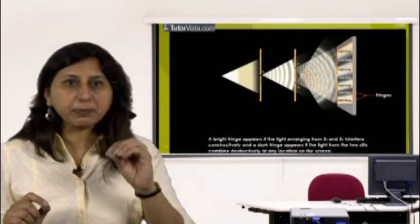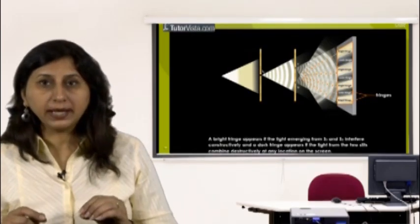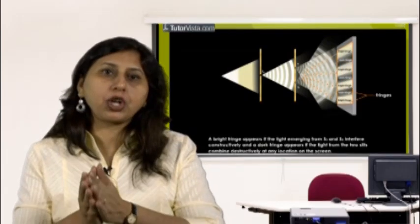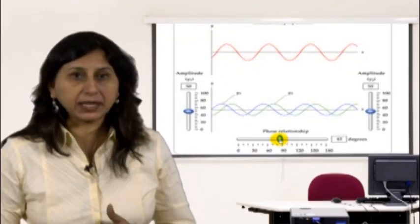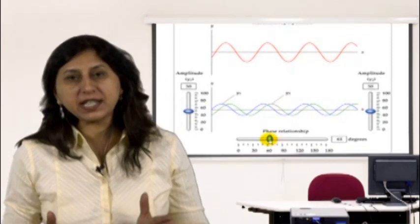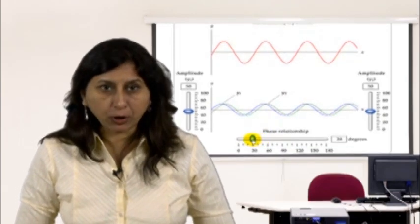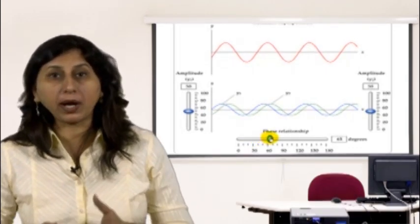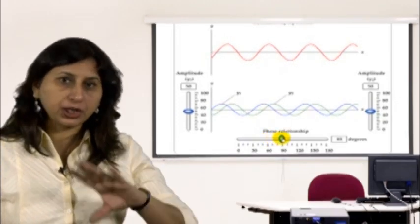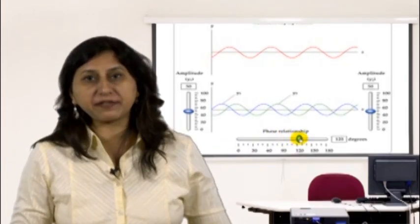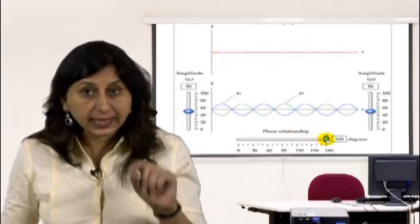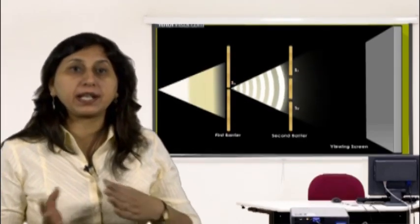A bright fringe appears where light from S1 and S2 interfere constructively; a dark fringe where they combine destructively. If d·sinθ = nλ, the two waves are in phase and constructively interfere — these points are the maxima. If d·sinθ = (n + ½)λ, the waves are half a wavelength out of phase and destructively interfere — these are the minima. The double slit experiment proves light has wave properties through constructive and destructive interference.